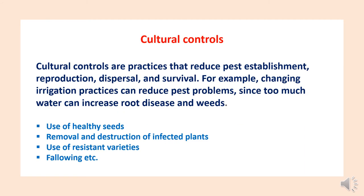Cultural controls are practices that reduce pest establishment, reproduction, dispersal and survival. For example, changing irrigation practices can reduce pest problems since too much water can increase root disease and weeds. Various cultural practices used include: use of healthy seeds, removal and destruction of infected plants from the field, use of resistant varieties and fallowing.